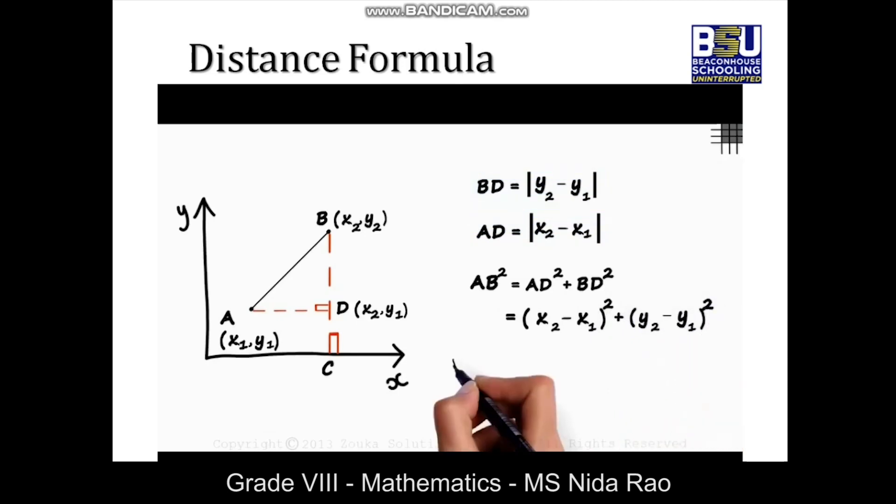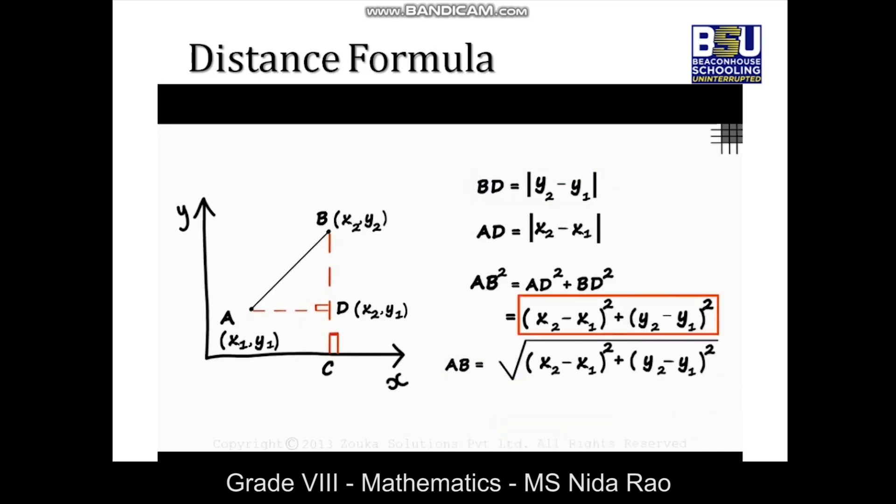So length of AB will be the square root of the addition of these two. Now the formula has been generalized. All we need to know is the coordinates of the two endpoints and we can just feed it into this formula. Notice that x₁ and y₁ are coordinates of point A and x₂ and y₂ are coordinates of point B. This, by the way, is called the distance formula.